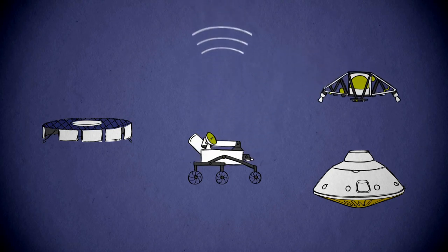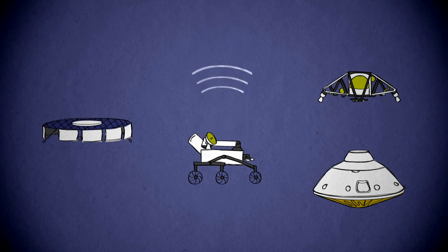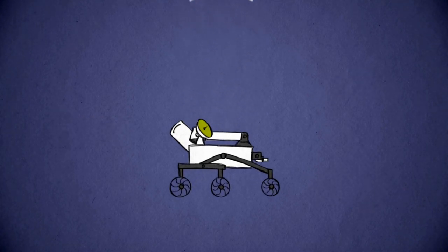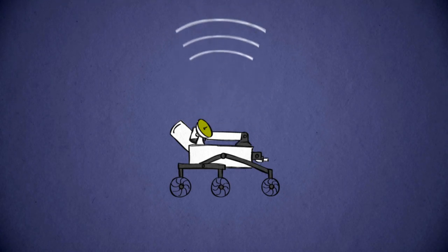That won't hurt the rover, it just means we won't know what's happening right away. Even with a solid signal, the communications link direct to Earth only works during the first half of the rover's descent.